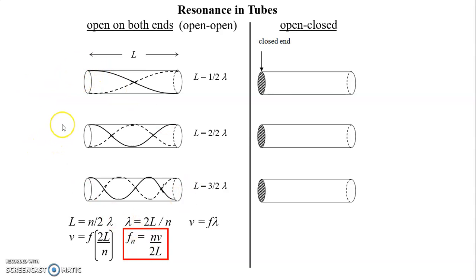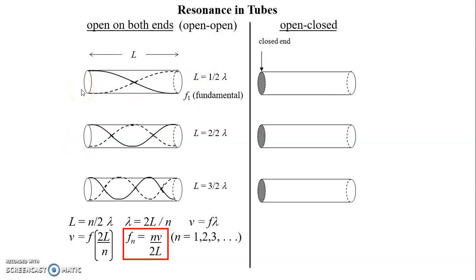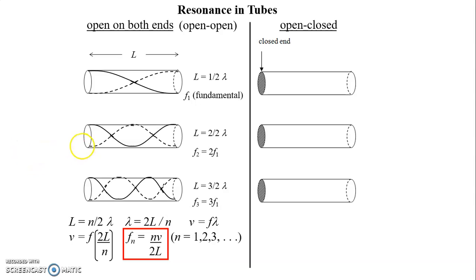FN is the frequency of the nth harmonic, and N is an integer: 1, 2, 3 — the same as for waves on a string. We call the lowest frequency the fundamental. The second harmonic is twice the fundamental, and the third is three times the fundamental. The frequency is always N times the fundamental, where N is the integer 1, 2, 3, and so on.